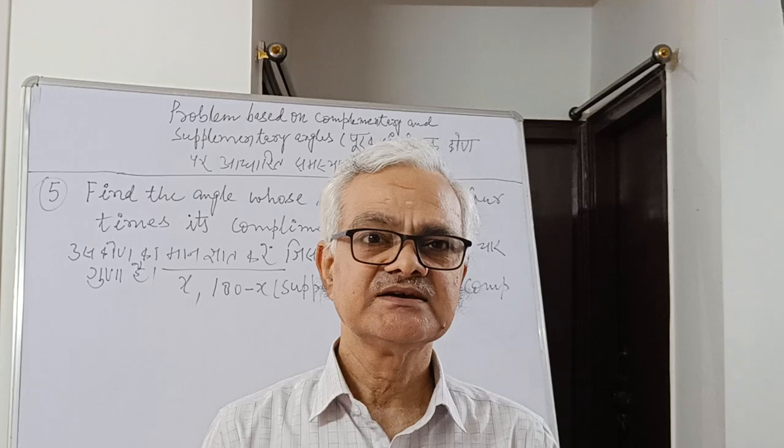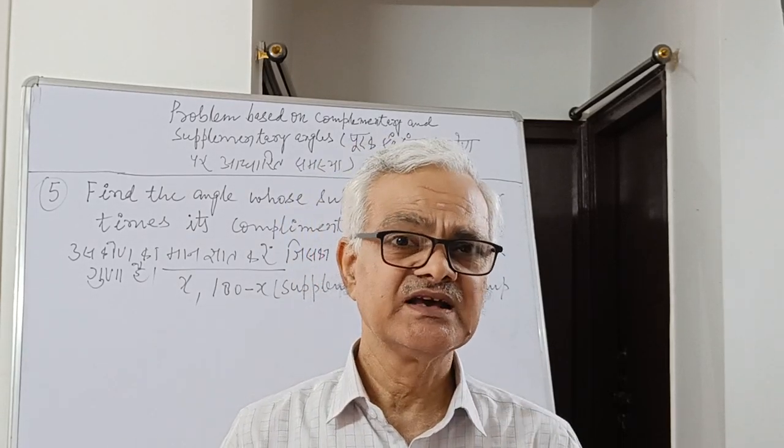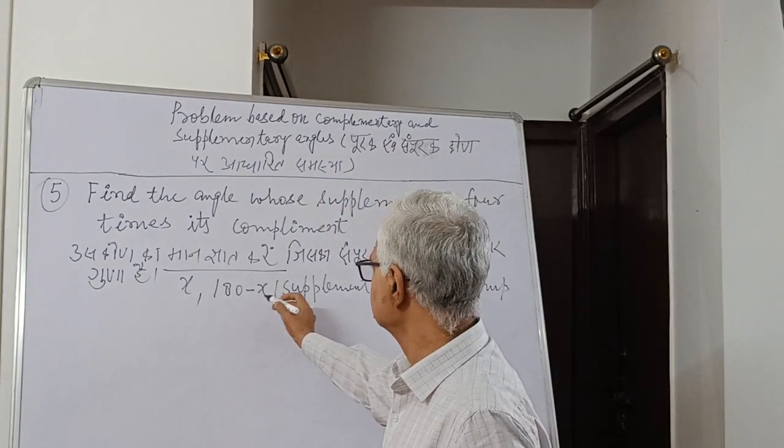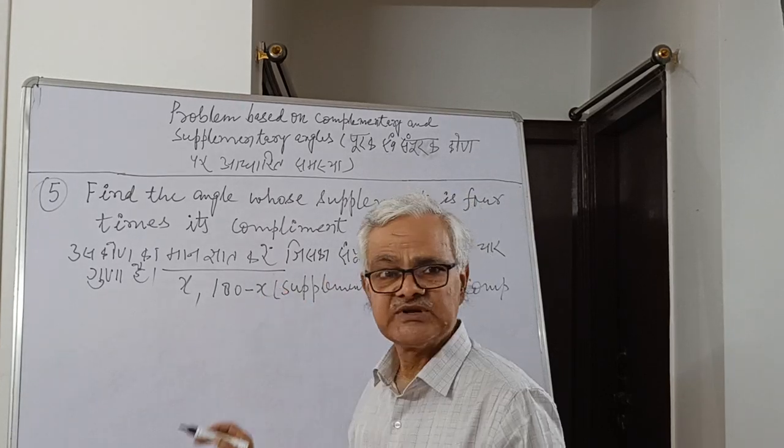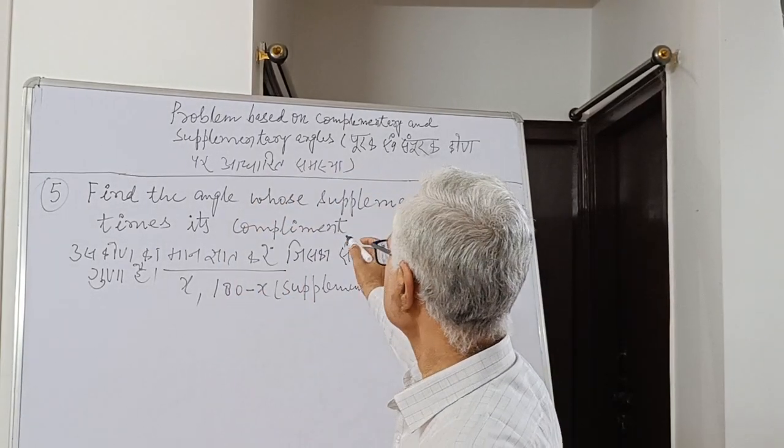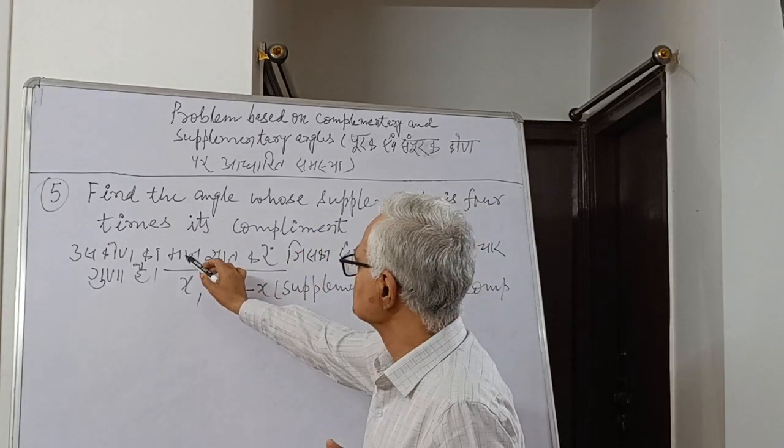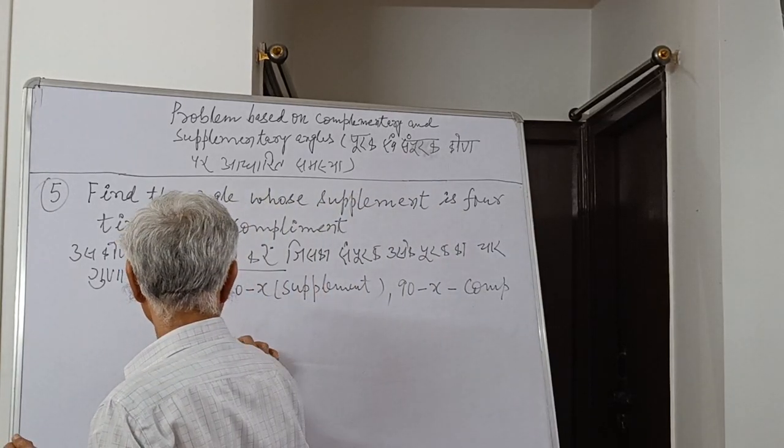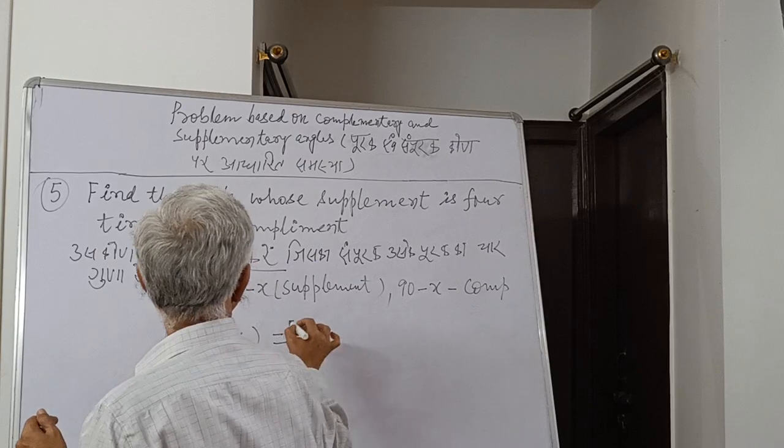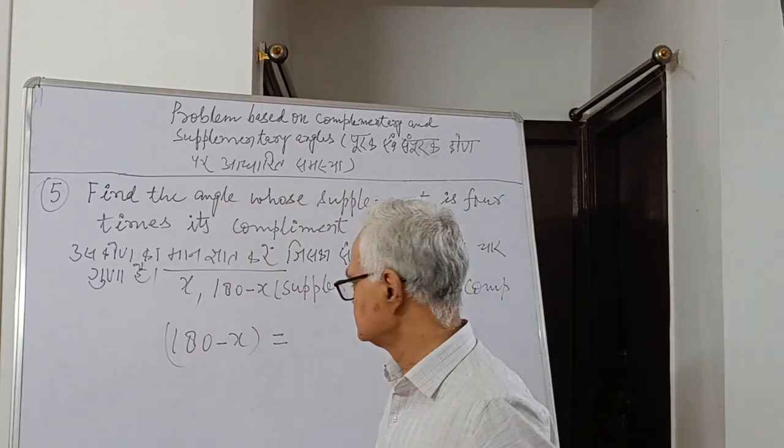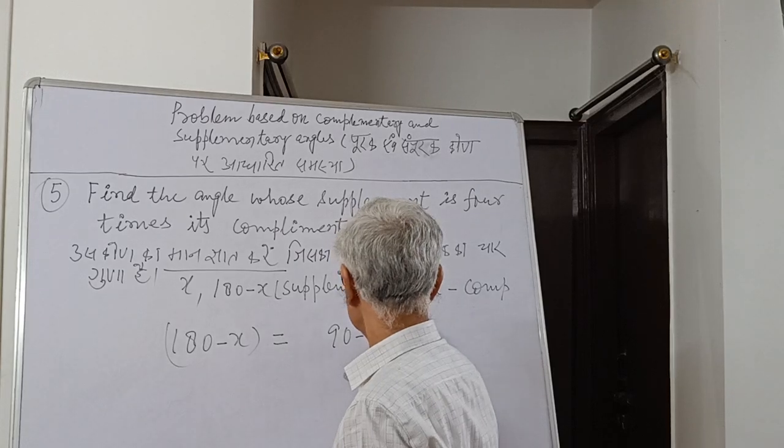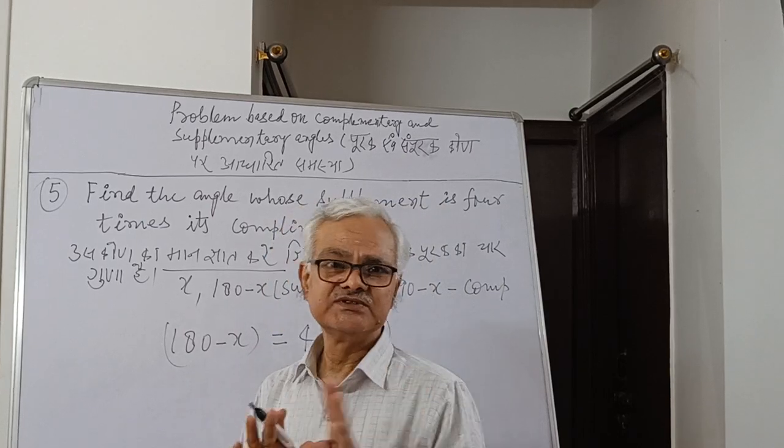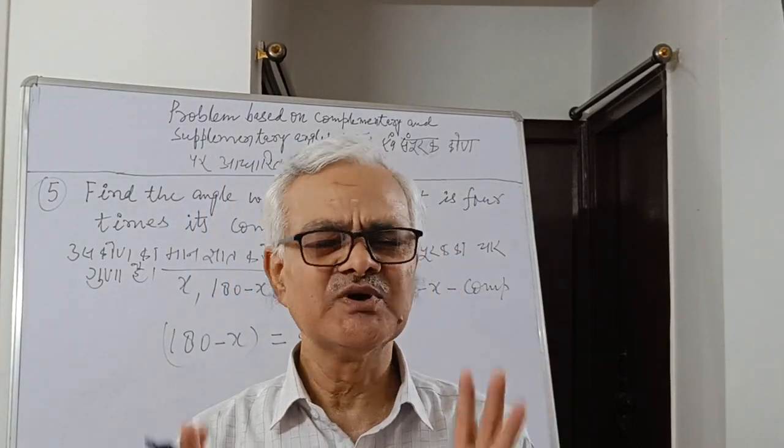The complement is 90 - x and the supplement is 180 - x. What we have to solve is 180 - x equals 4 times (90 - x). You have to understand this.